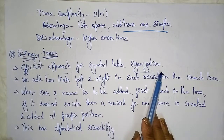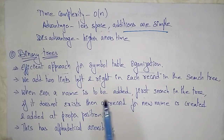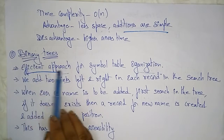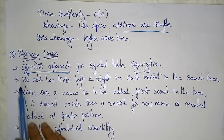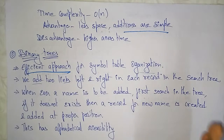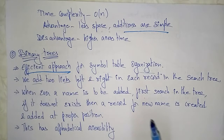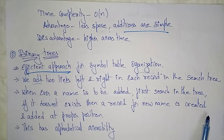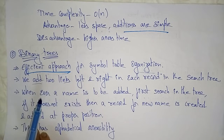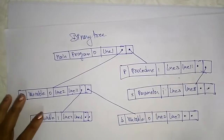The next data structure is the binary tree. The binary tree is a more efficient approach for symbol table organization. We add two links — left and right — in each record in the search tree. Whenever a name is to be added, you first search in the tree. If it does not exist, a record for the new name is created and added at the proper position. This has alphabetic accessibility.